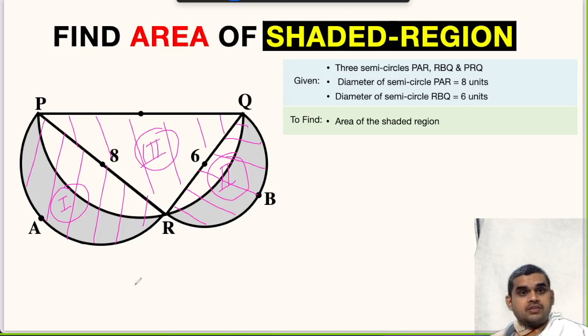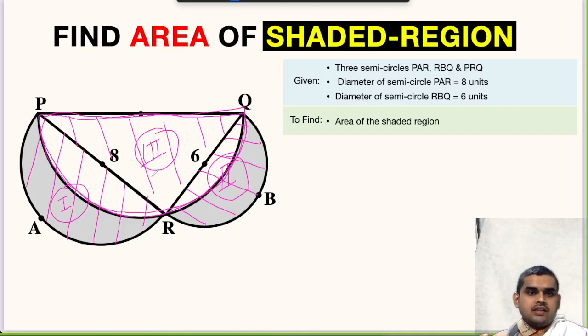Next, what we have to do is we can subtract the area of semicircle PRQ. If we subtract this area of semicircle from the entire area, the remaining part will be the area of shaded region. Let us quickly find these areas.